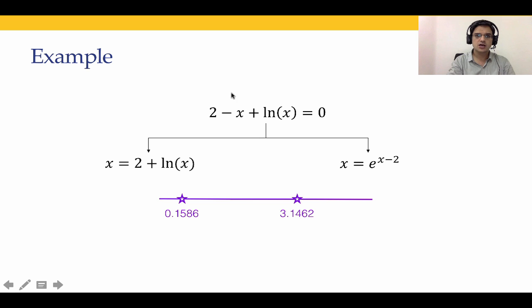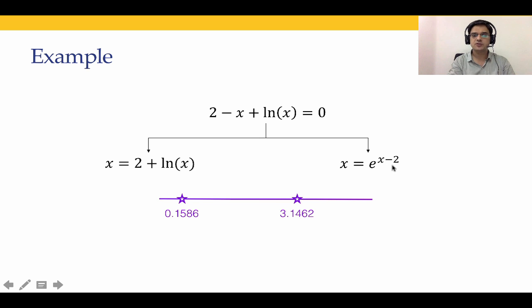Two forms of g(x) arise from the equation. In case 1, we move x to the right-hand side to get x = 2 + ln(x). In case 2, rearranging gives ln(x) = x - 2, so x = e^(x-2). We have seen previously that this problem has two solutions: x = 0.1586 and x = 3.1462.